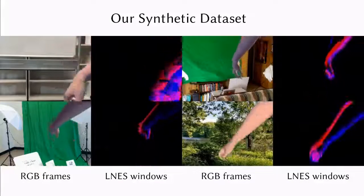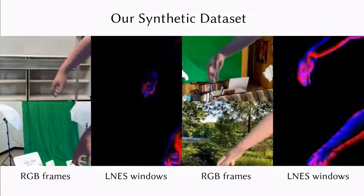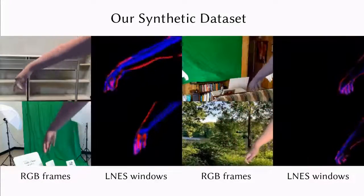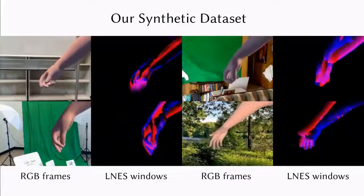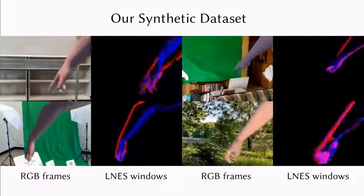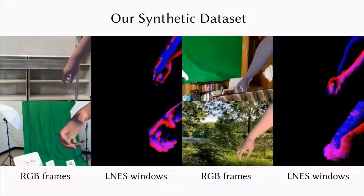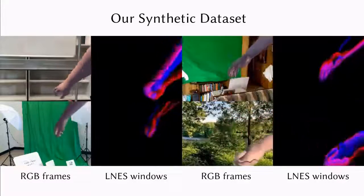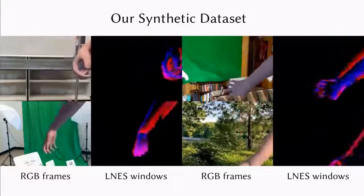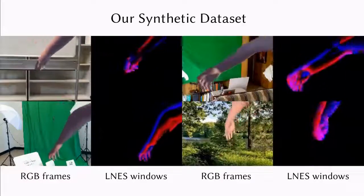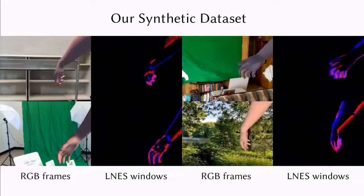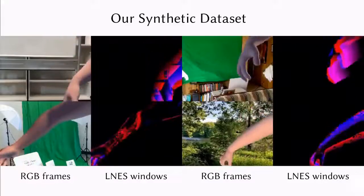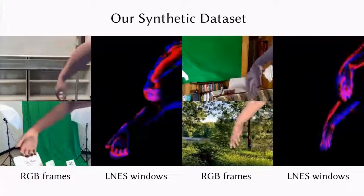As there are no available datasets for 3D hand reconstruction from event streams, we developed a new GPU event stream simulator to generate such a dataset. Our event stream simulator renders synthetic images of hands and simulates per-pixel brightness changes, which trigger synthetic events. We generate data originating from scenes with MANO hands with diverse appearances and poses observed in a variety of backgrounds, lighting conditions, fields of view, and event thresholds.